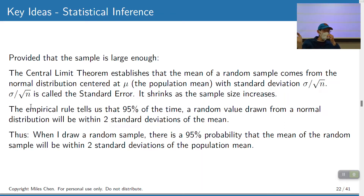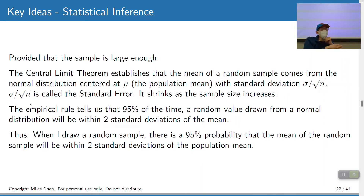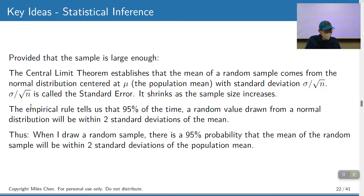This makes intuitive sense: if you only select two people and calculate their mean, you could by random chance get two people with very high or very low values — that's not unusual to imagine. But if you have 100 people, it would be hard for all 100 to have very high or very low values. So the mean of a big random sample is probably going to look closer to the general population.